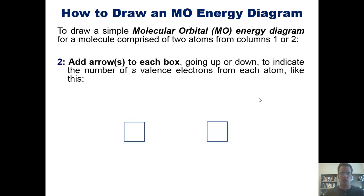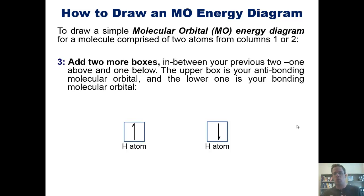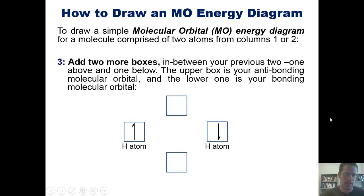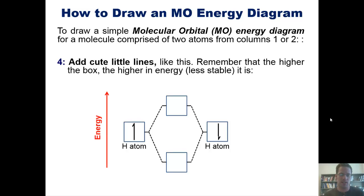This would be a scenario where each atom has one valence electron, such as two individual hydrogen atoms. Step three: add two more boxes in between the previous two — one above and one below. The upper box represents your anti-bonding orbital and the lower box is your bonding molecular orbital. Step four: add connecting lines. Remember that the higher the box, the higher in energy and hence less stable it is. The bonding molecular orbital is lower in energy and therefore more stable than the individual atomic orbitals, which provides an energetic incentive for the molecule to form.